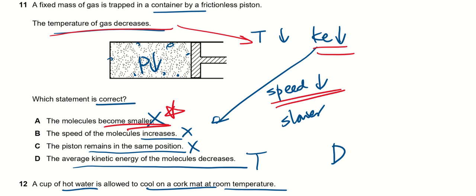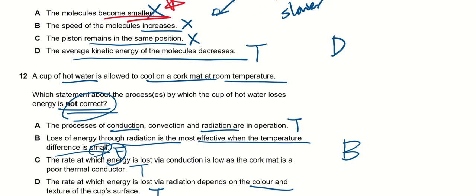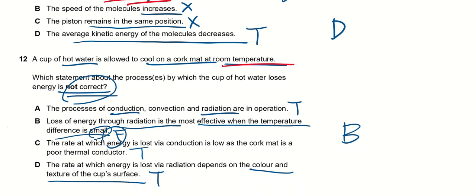A cup of hot water is allowed to cool on a cork mat at room temperature, so the cup is hotter than the surrounding. Which statement about the processes by which the cup of hot water loses energy is not correct? We are looking for something that is false. For A, processes of conduction, convection, and radiation are in operation. This is true, although in small quantities, but it is still true. Conduction through the cork mat, convection—the air above the hot water is heated up and then it rises, carries away thermal energy with it.